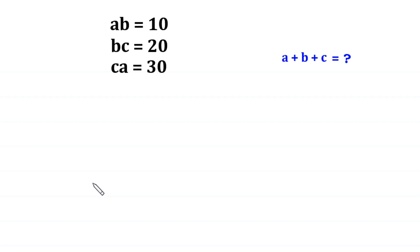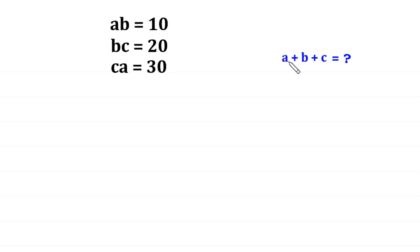Hello, welcome to how to solve this very nice system of equations. a·b is equal to 10, b·c is equal to 20, and c·a is equal to 30. We need to find the value of a plus b plus c.